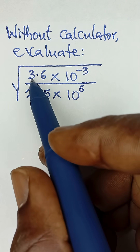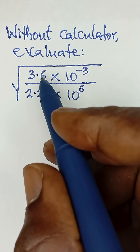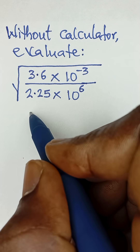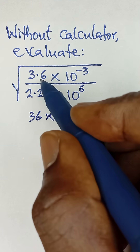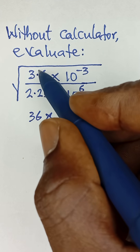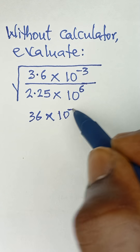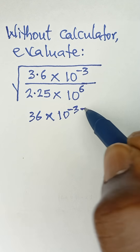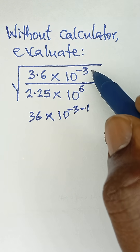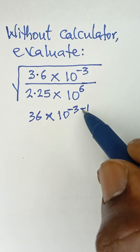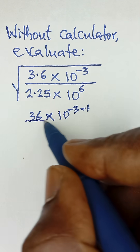3.6 can be expressed as 36 because 36 is a perfect square. To make this 36, we moved the decimal point once. Since we moved the decimal point once, we subtract 1 from the power. Anytime you move a decimal point to the right, you subtract from the power — so we subtract once.